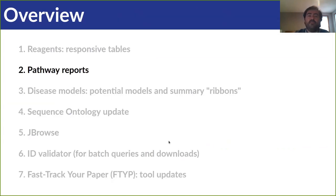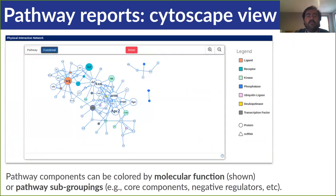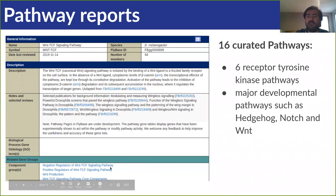Next up, we have the new pathway reports, which represent a new curated resource at Flybase. The idea is to facilitate access to data on signaling pathways. Right now we have data on 16 pathways. These reports are organized in a hierarchical way, with a top-level report and subreports that cover the core set of components required for the activated pathway to function, as well as subgroups representing positive and negative regulators of the core components. Sometimes we even have more subgroups — for example, for the Wnt-TCF pathway shown here, we have another subgroup for factors involved in Wnt ligand production. At the top of the reports you'll see high-level summaries, and there's also a listing of the subgroups.